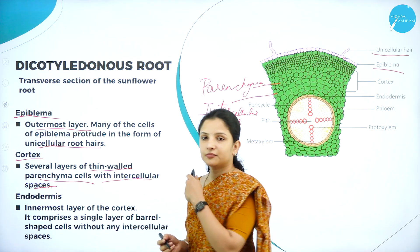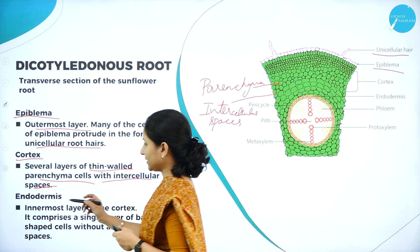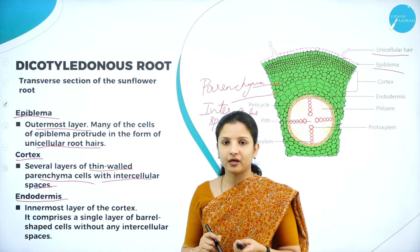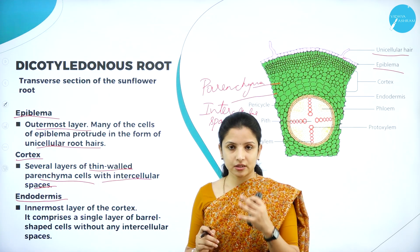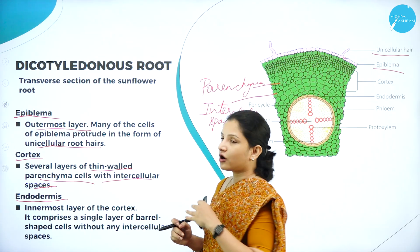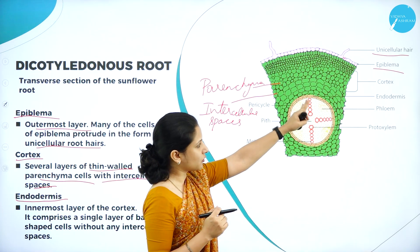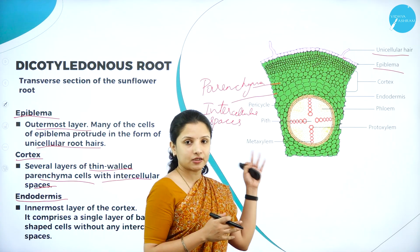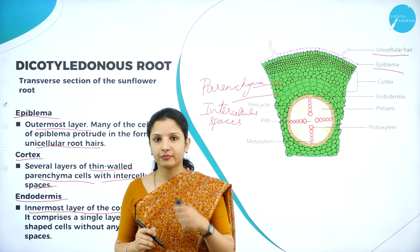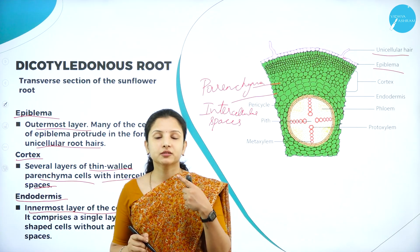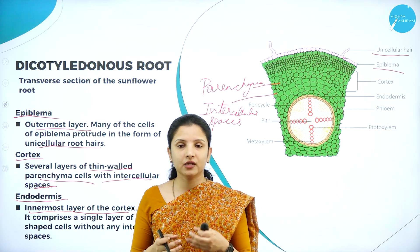The cortex is mainly made up of several layers of parenchyma cells with very thin walls and intercellular spaces. Just as there is an epiblema on the outside, soon after the cortex there is another layer called the endodermis. 'Endo' means inside and 'dermis' means skin, so it is the inner covering. The endodermis separates the vascular bundles from the cortex. It is the innermost layer of the cortex and is made up of a single layer of barrel-shaped parenchyma cells.